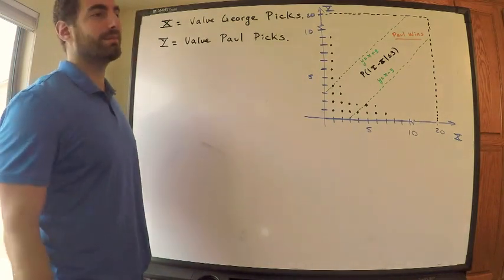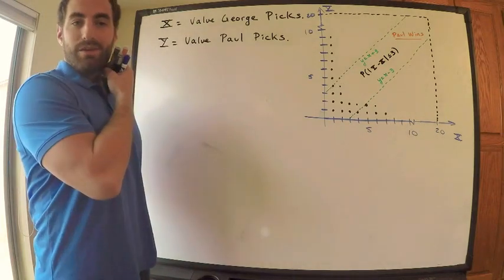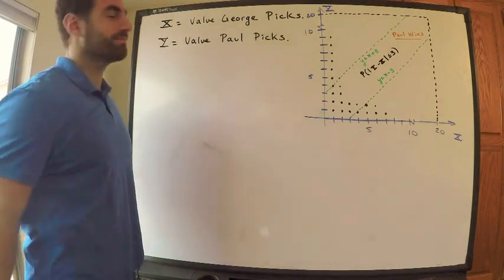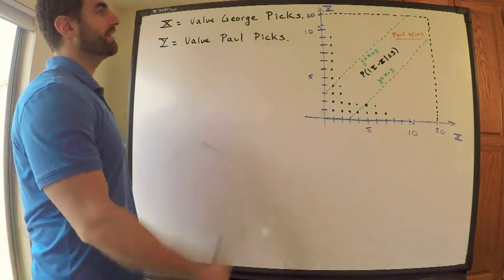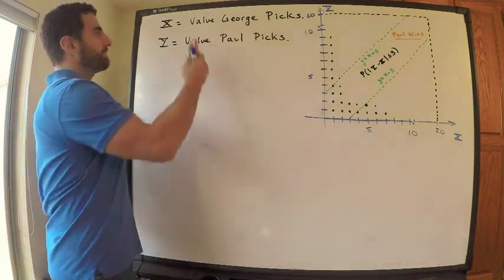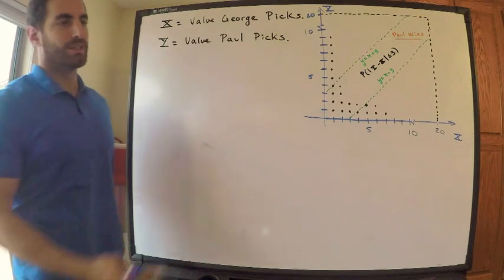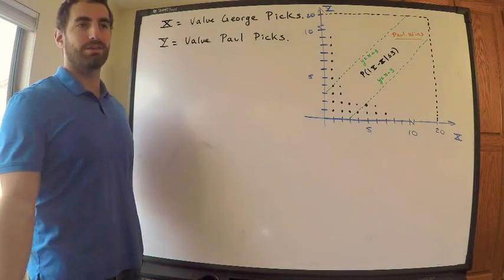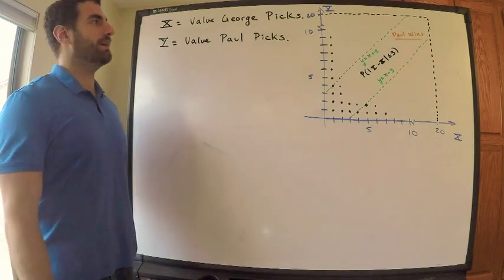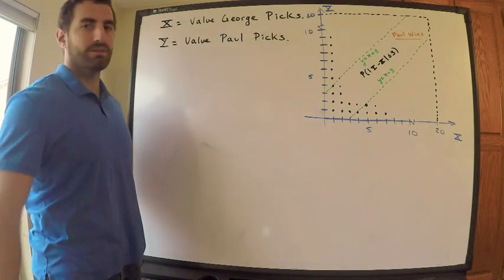This is the way that I'd solve the question. It involves a picture, I like pictures, so this is the picture I have. Basically, of course you read the question, but George and Paul pick a number between 1 and 20, inclusive, meaning they can pick 1 and 20.